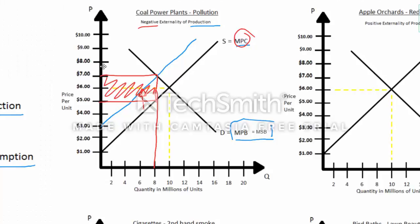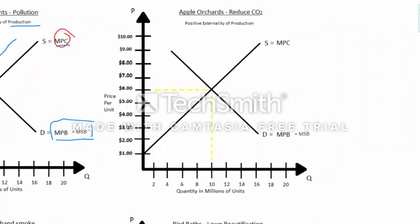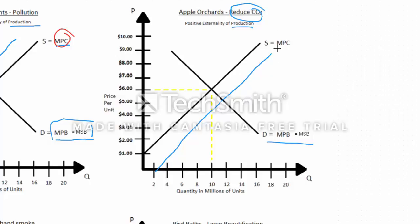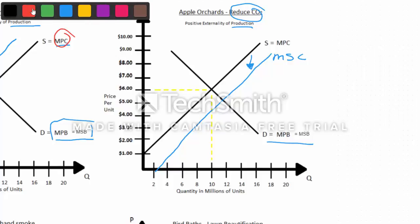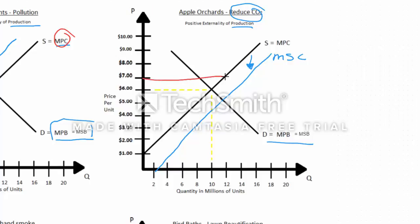For a positive externality of production — like reducing CO2 from an apple orchard — we leave the demand curve alone, because it's the supply curve that has an externality. In this case it's positive, so we decrease the costs. But that benefit isn't being realized by the producer, so we need to lower costs by adding a subsidy. We take the marginal private costs and try to get it down to the marginal social costs by offering a $2 subsidy. The producer gets $7, the consumer only pays $5, and the government makes up the difference.